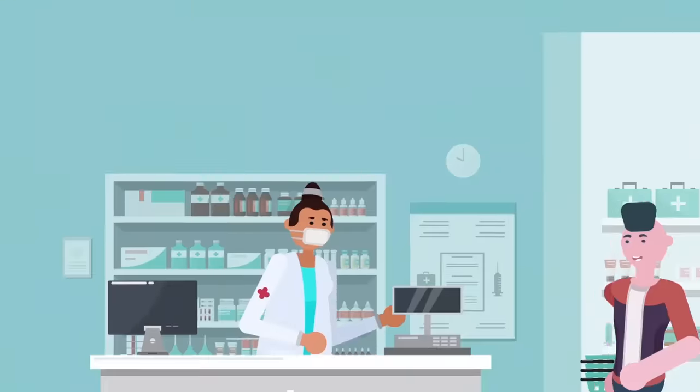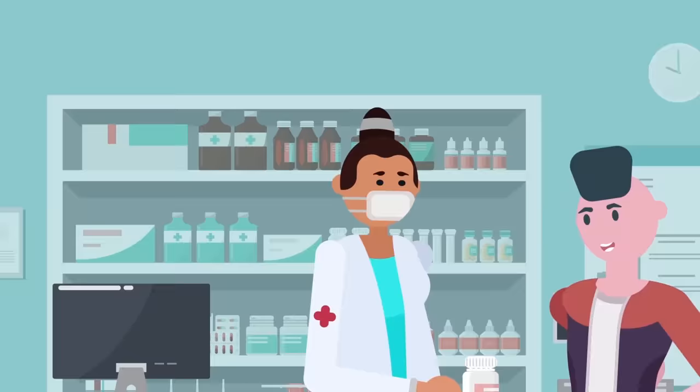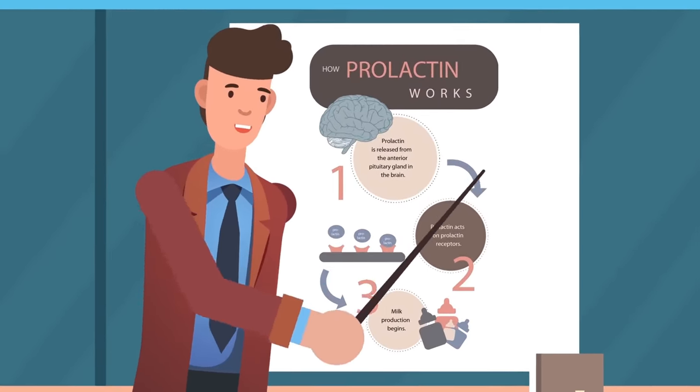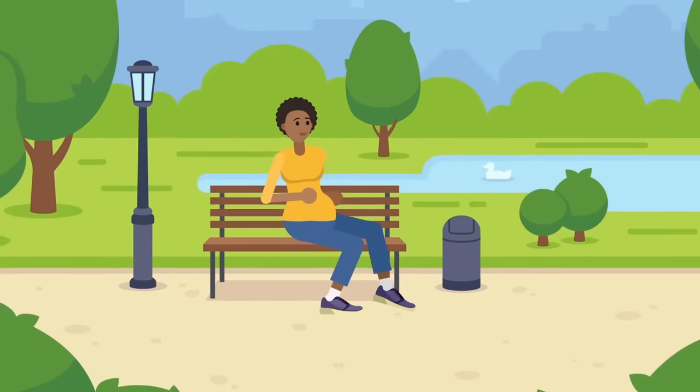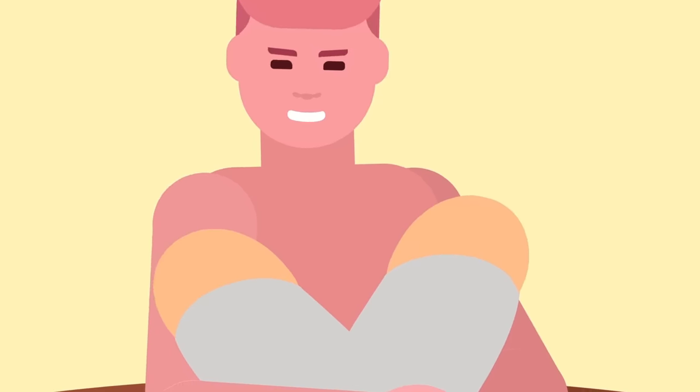It usually doesn't happen without any drugs, although certain things can happen in the male body that makes it produce more of the hormone prolactin. One of those things is starvation. When women are pregnant, the levels of prolactin in your body increases, but sometimes it does in men too. Although that's an anomaly, not an evolutionary requirement in nature.